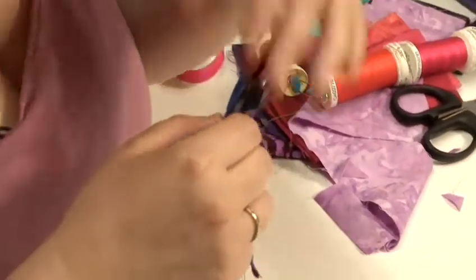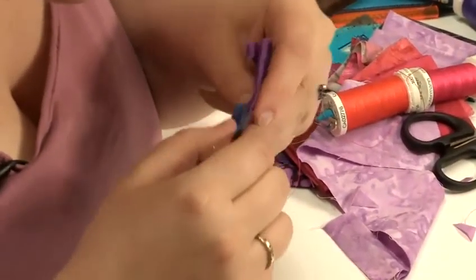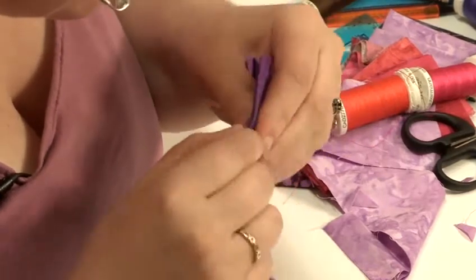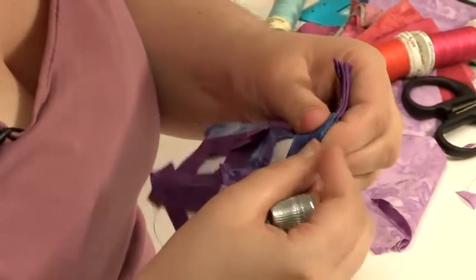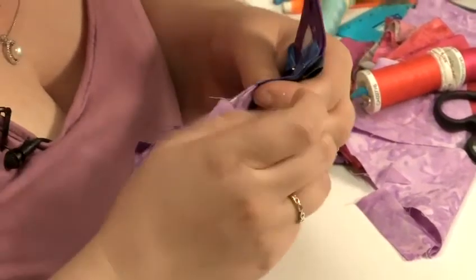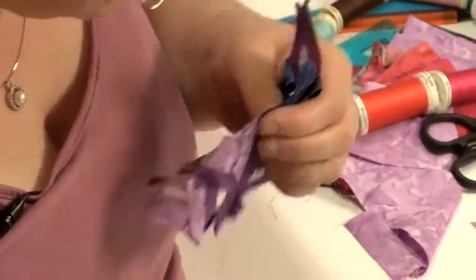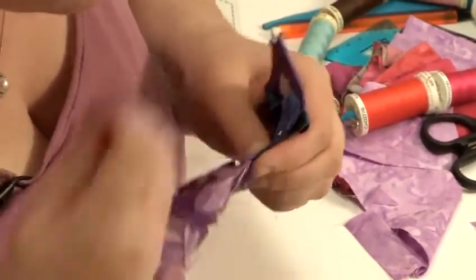So yet again you fold it over. Pin it as it's long pieces. Matching the corners in the end. In smaller pieces you may not need pins as you can hold it together with your fingers. And continue stitching. No need to cut the thread unless of course it breaks.